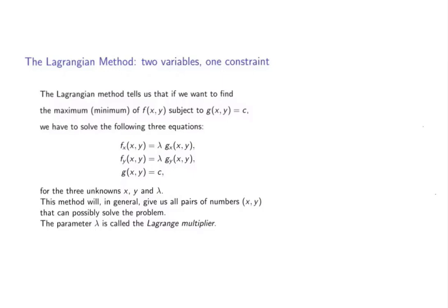The method of Lagrange multipliers tells us that if we want to find the maximum or minimum of the function f subject to the constraint g equals c, then the procedure is that first we determine the first derivatives of the functions f and g.